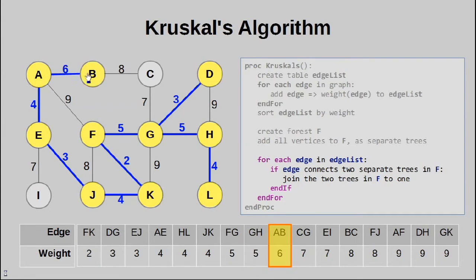Moving on, we pick AB, that just connects it to the existing tree. Same deal for CG and EI. So actually, we have our minimum spanning tree.